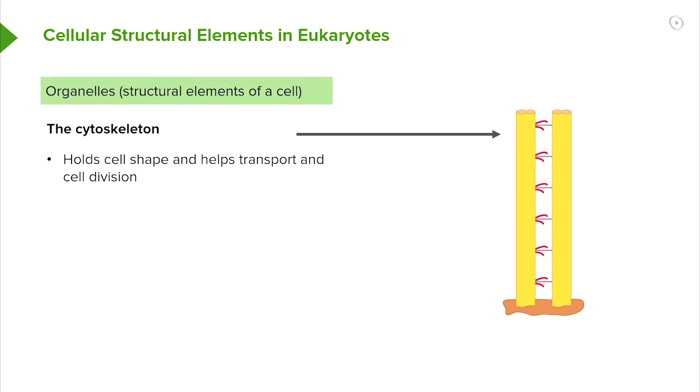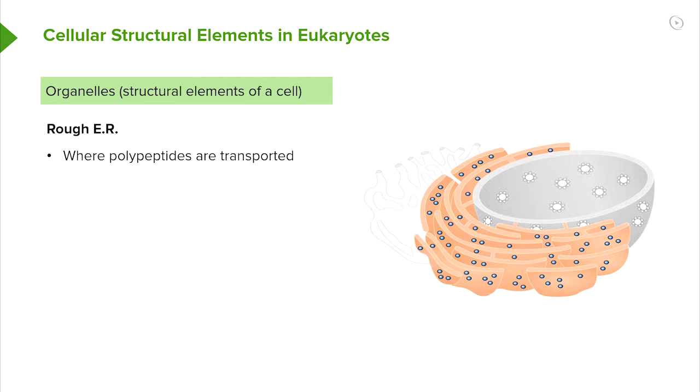The cytoskeleton extends across the whole cell, hence the name. It helps it to keep its shape and helps to transport and position organelles. For example, in plant cells, chloroplasts are pushed out to the edge of the cell to catch the maximum amount of light. When the cell divides, the chromosomes are split up on a spindle that's formed from the cytoskeleton.